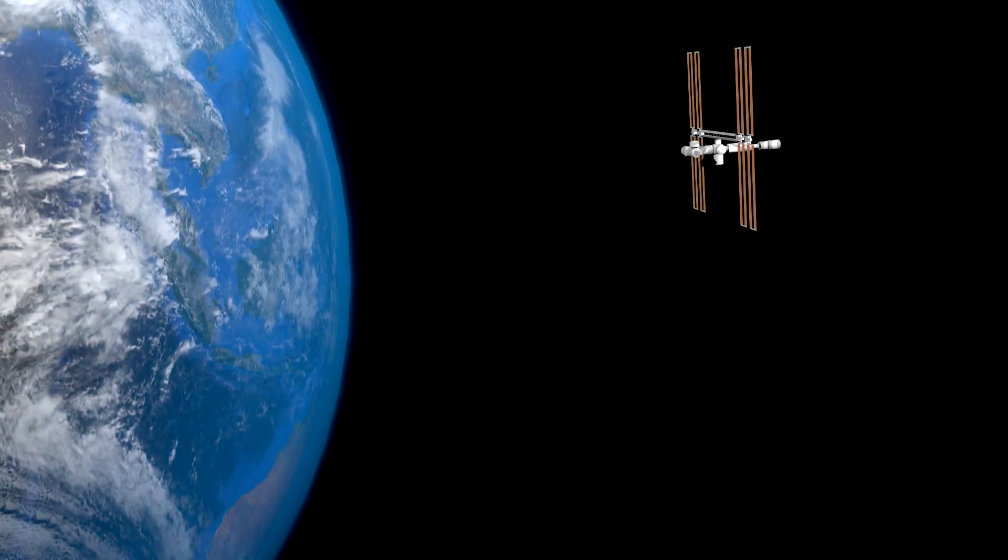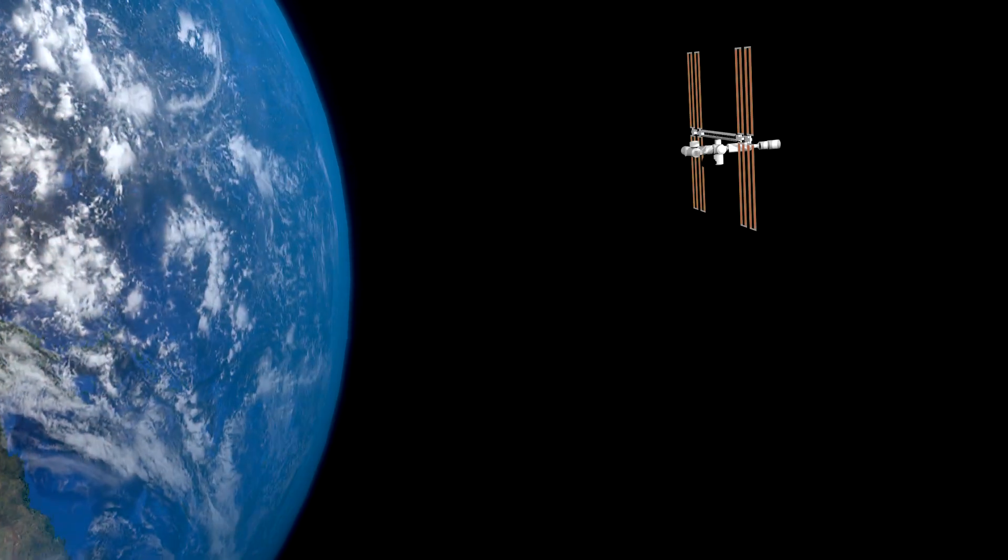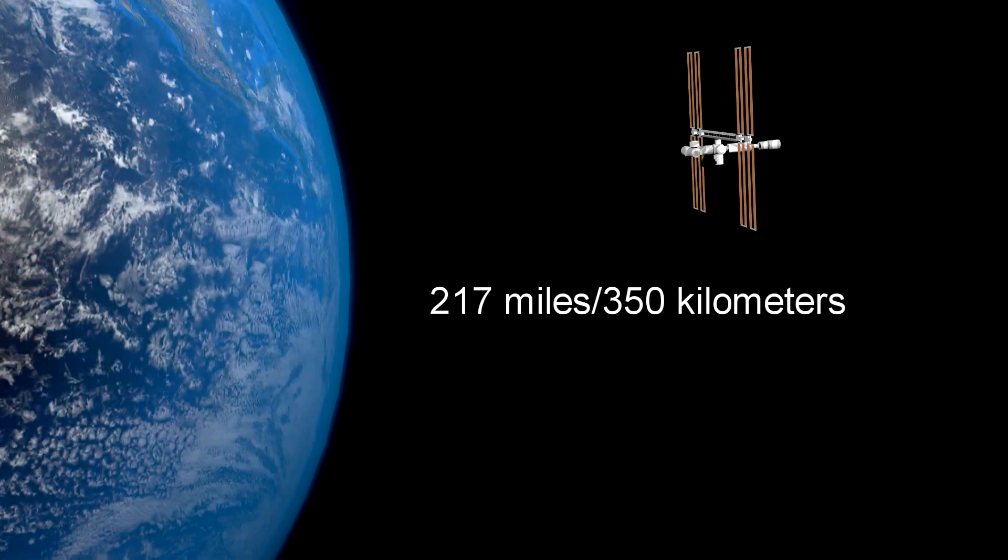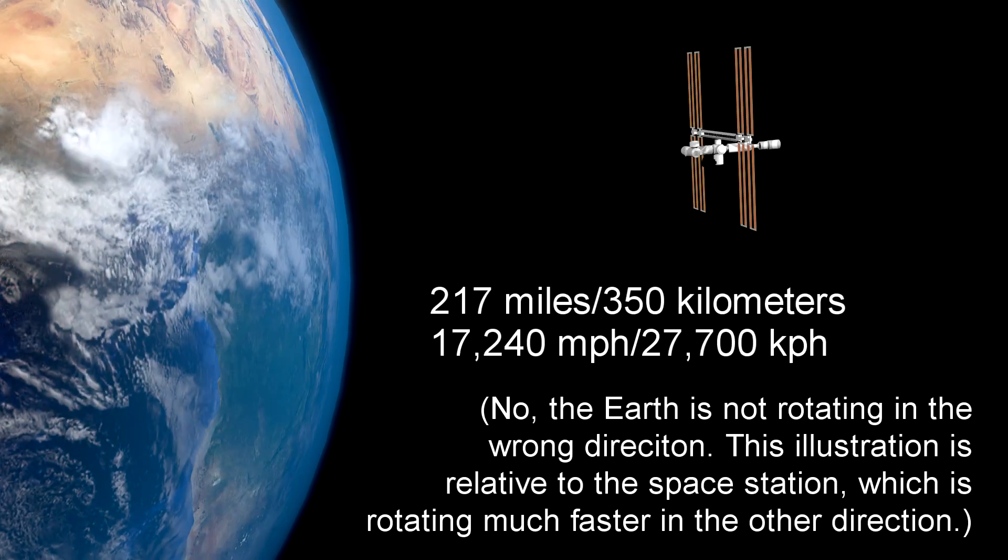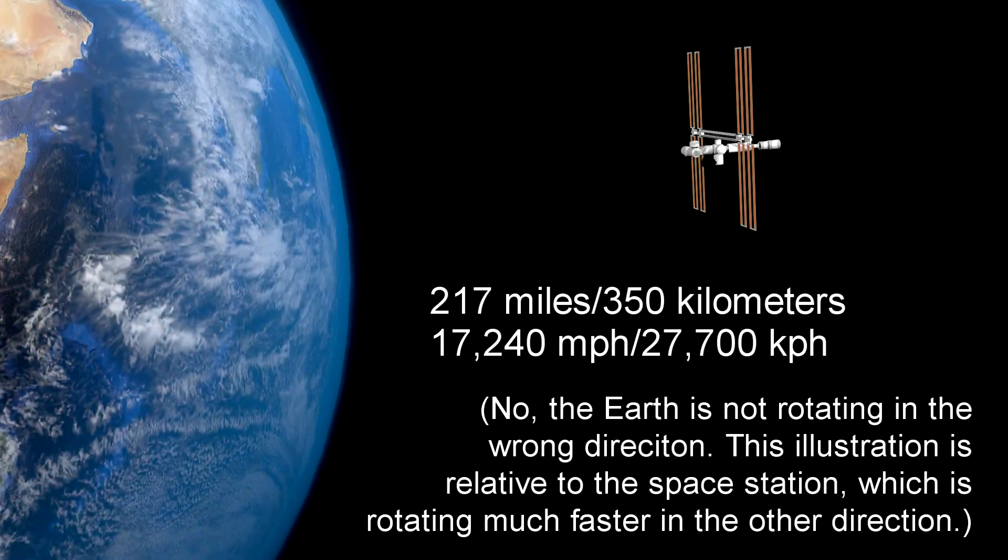The International Space Station is an example of something that's in orbit right now. It's around 217 miles, or 350 kilometers up, and traveling 17,240 miles per hour, or 27,700 kilometers per hour.